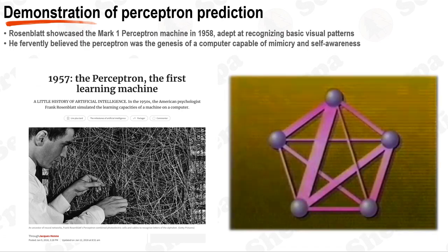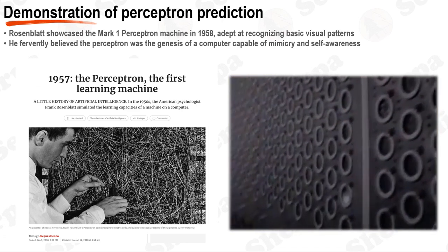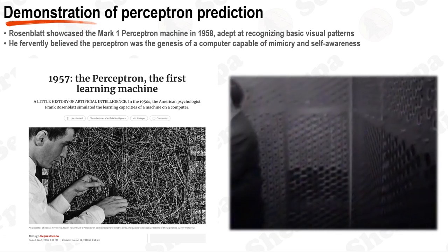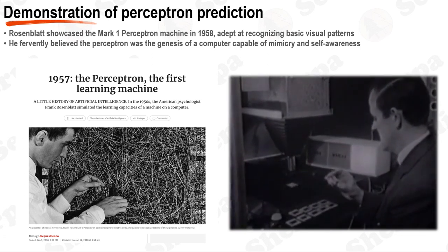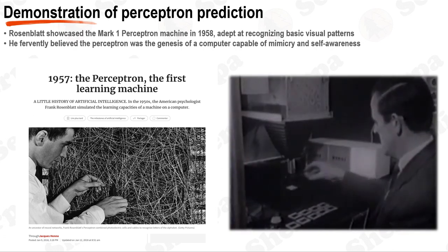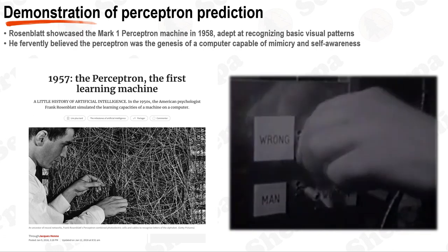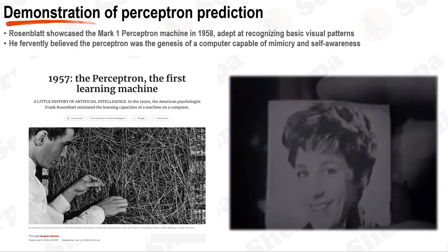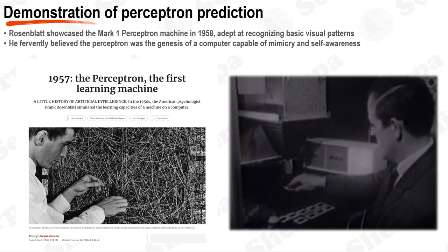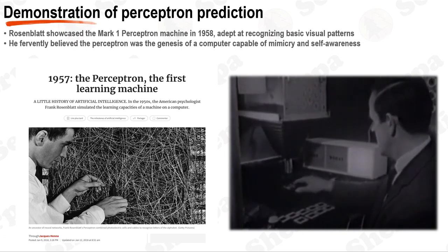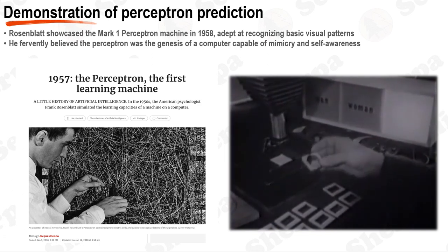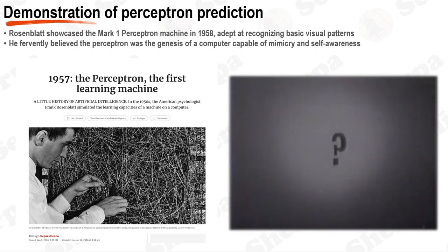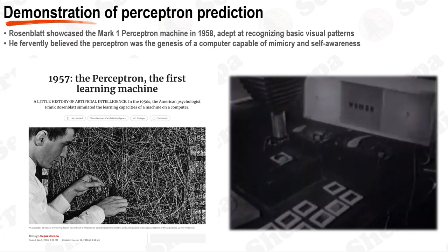In the formative years of neural networks, researchers frequently demonstrated their work to validate and promote it. A noteworthy example is Frank Rosenblatt's Mark I Perceptron machine, showcased at the Cornell Aeronautical Laboratory in 1958. This remarkable machine was devised to discern simple visual patterns, such as geometric figures and alphabets, by learning through a series of training examples. Rosenblatt had such profound confidence in the potential of the Perceptron that he famously proclaimed in 1959: 'The Perceptron is the embryo of an electronic computer that the Navy expects will be able to walk, talk, see, write, reproduce itself, and be conscious of its existence.'